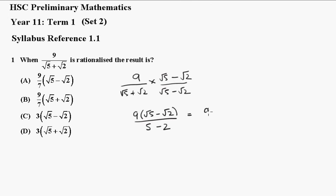That gives you 9 times root 5 minus root 2, all over 3. The 3 cancels with the 9, giving you 3 times root 5 minus root 2, and that is answer c.